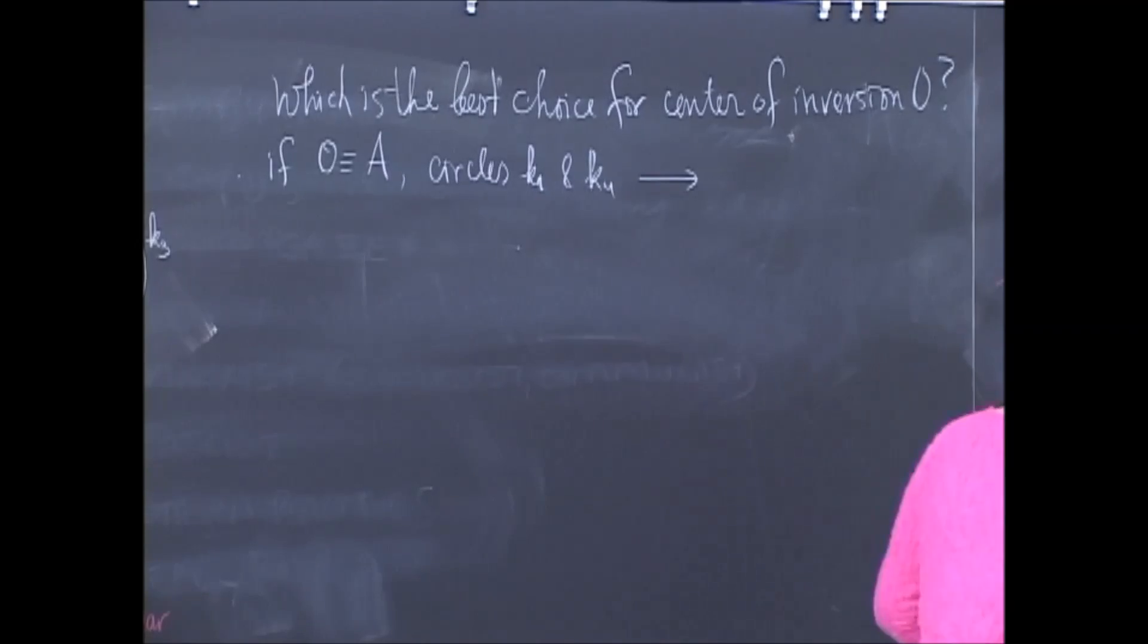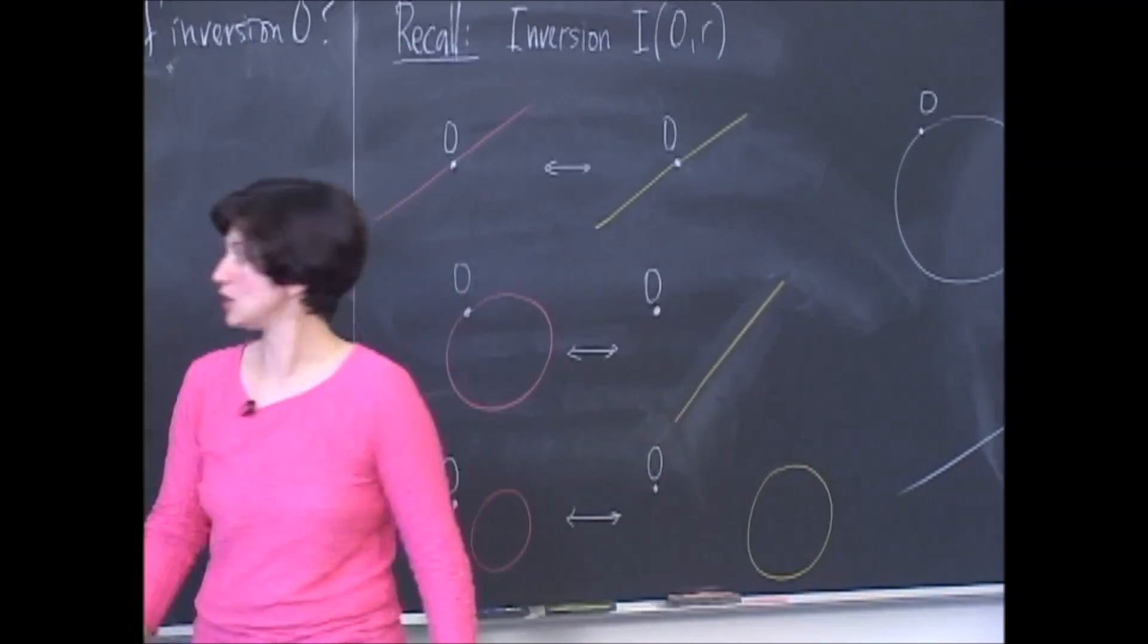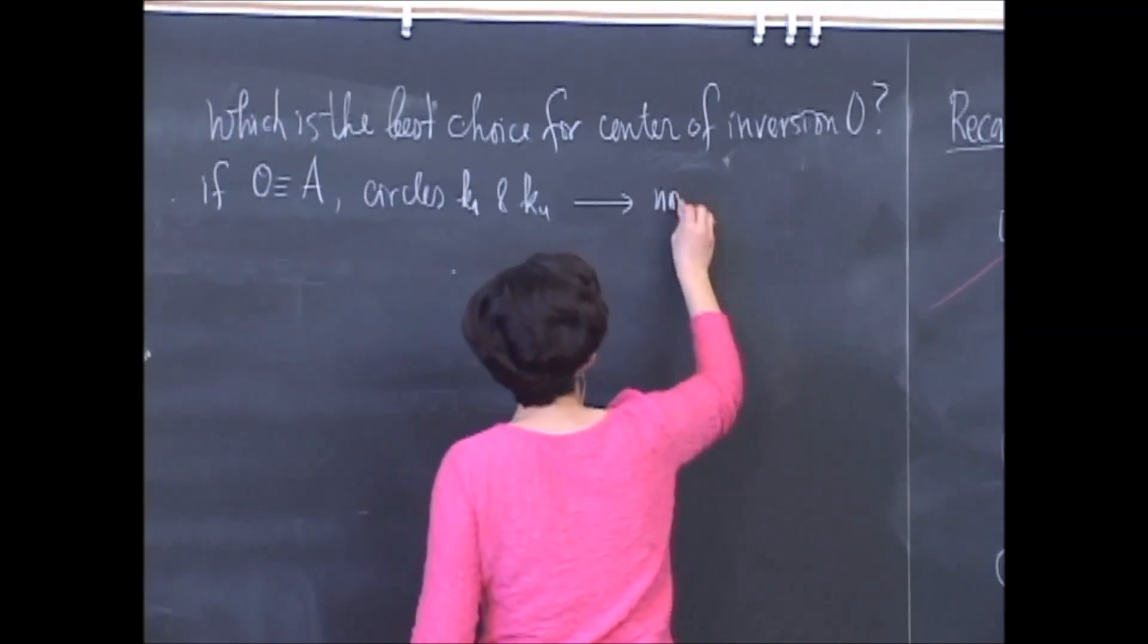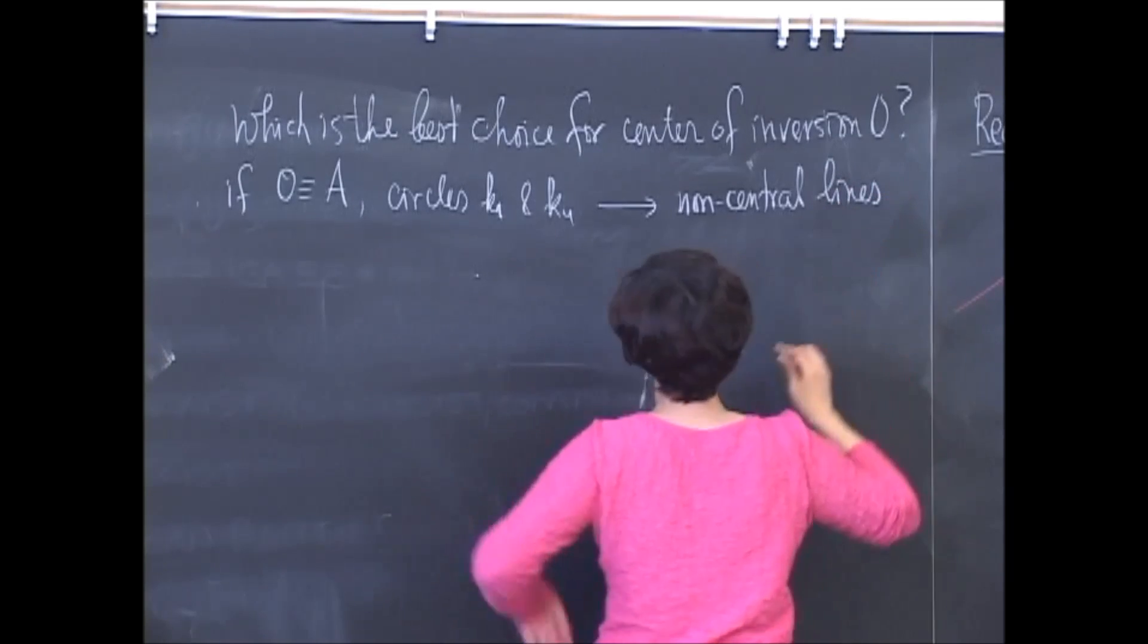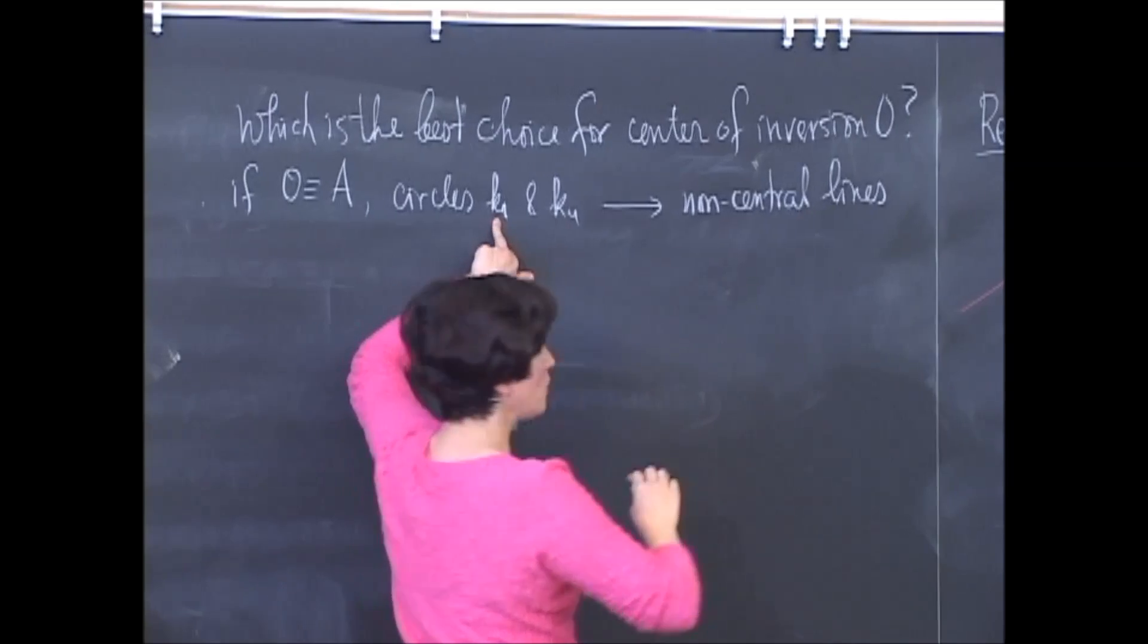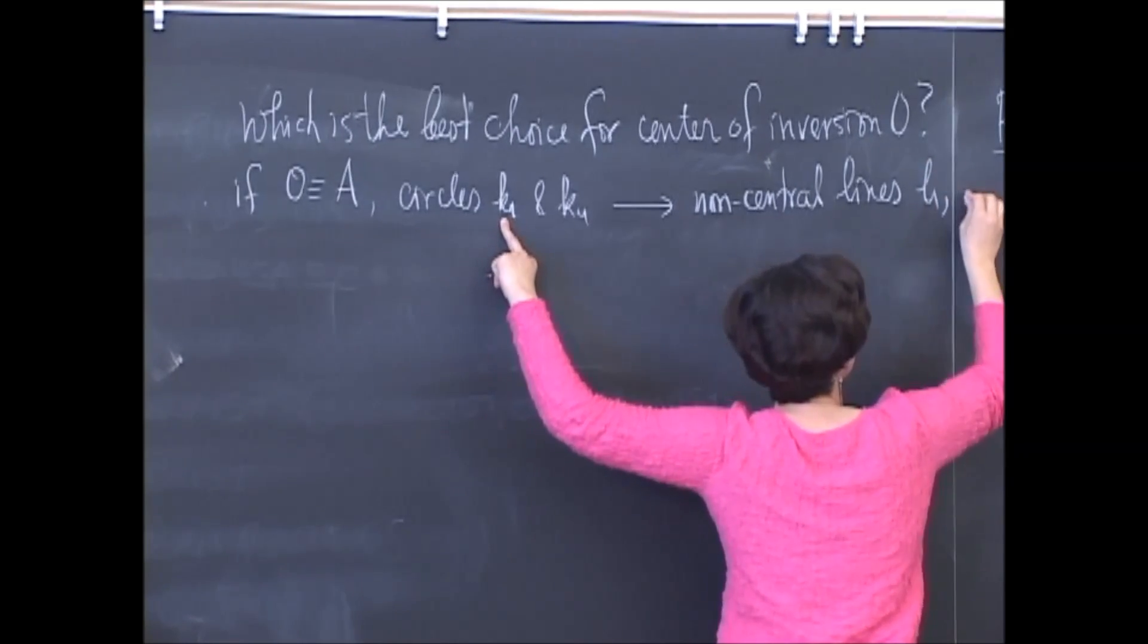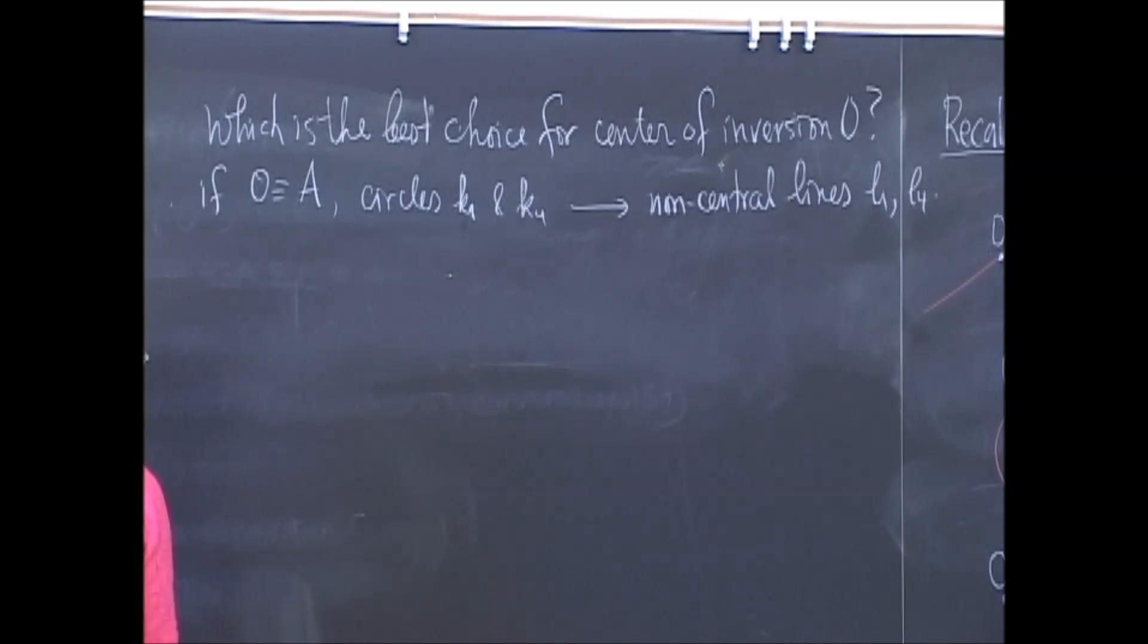But what kind of lines? There are two types of lines. Non-central lines. And let's give them names to these non-central lines. L1 for where K1 would go. And L4 for where K4 would go.